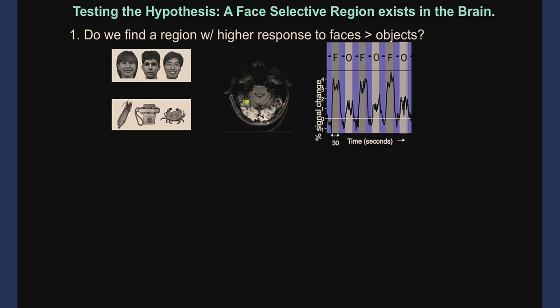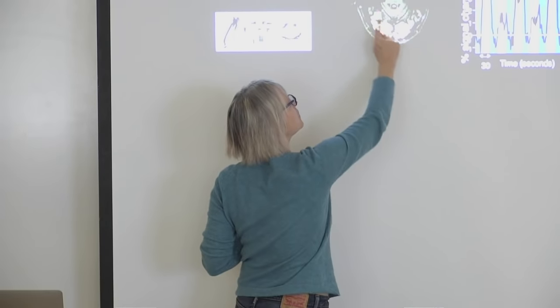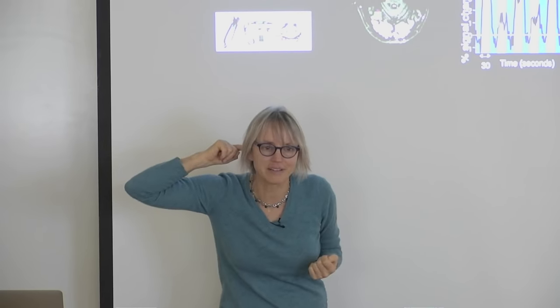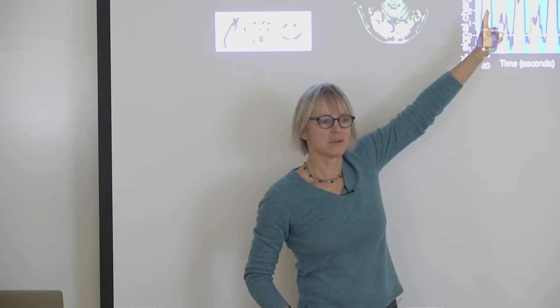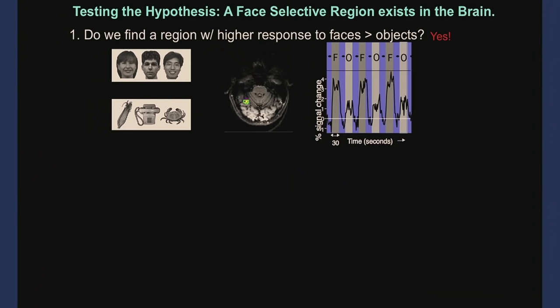The data I showed you before: this little patch of the brain — this is a horizontal slice, back of the head, left and right are flipped — that region responds much more to faces than objects. You see that in most subjects. But now, let's consider the hypothesis that that region is really selective to faces per se. The way you evaluate how strongly these data support that hypothesis is to consider whether there are any other alternative accounts consistent with these data but different from that hypothesis.